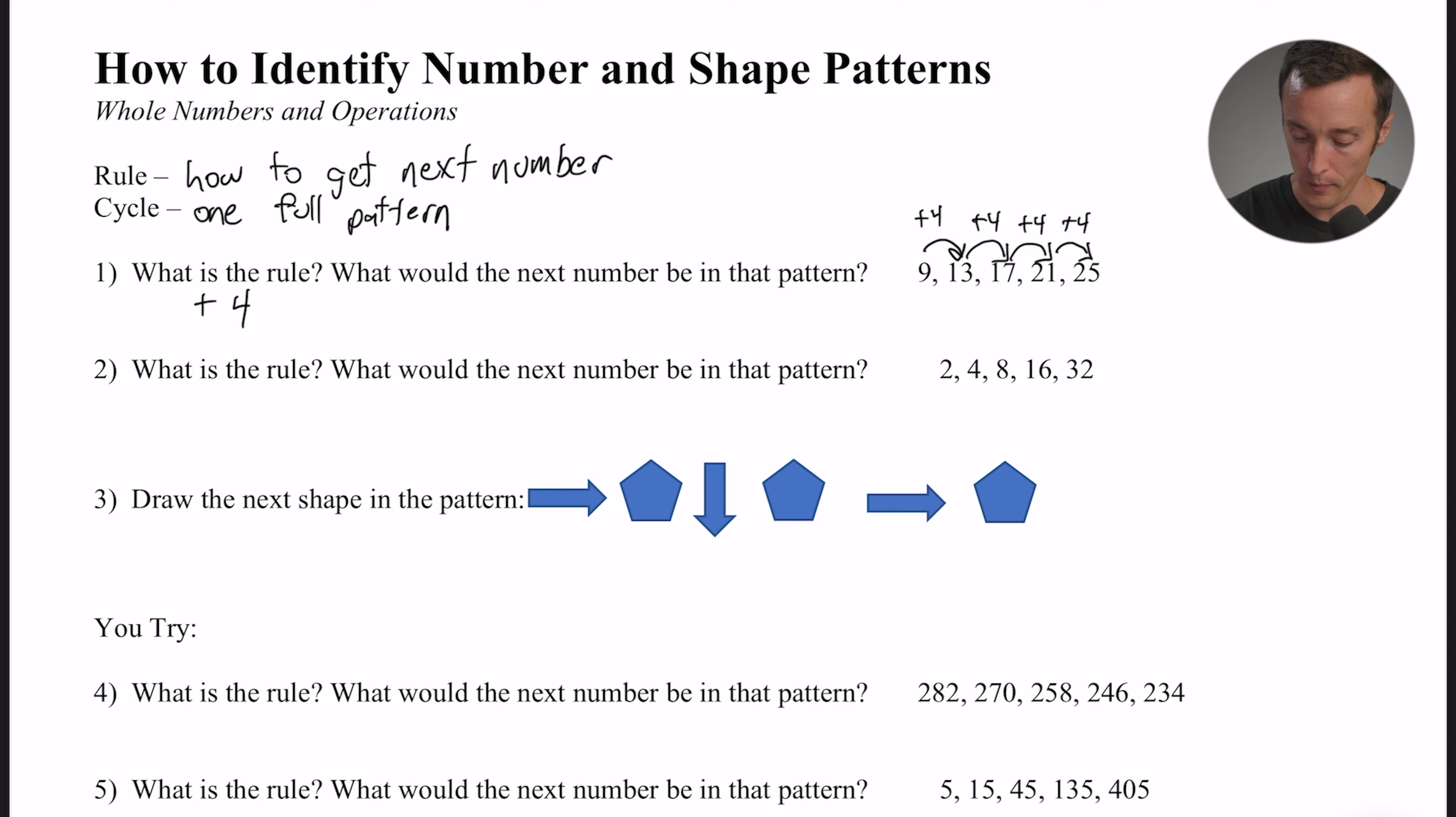So the rule here is going to be add 4, right? That's our rule for how we get from one number to the next. Now it has to work across the entire set of numbers, and in this case it did.